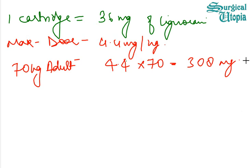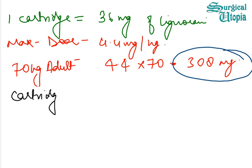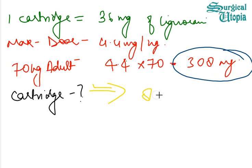This is the maximum dose that can be administered in a 70 kg adult without adrenaline. To find how many cartridges can be given: one cartridge contains 36 mg, and we have to give a maximum of 308 mg, so by simple math it is 308 divided by 36 mg, which amounts to around 8.5 cartridges. This can be given without any risk to the patient.